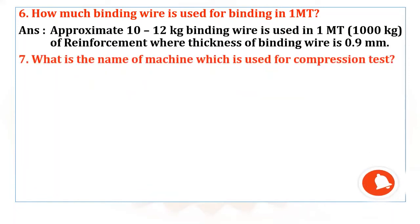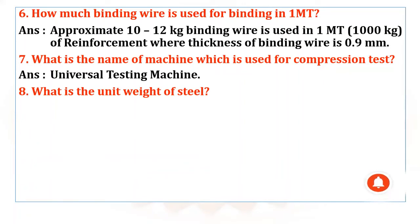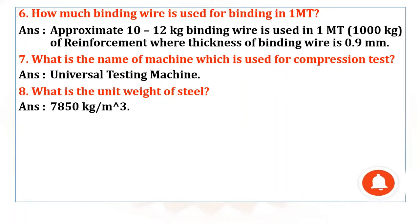Coming to the next question: What is the name of the machine used for the compression test? That is nothing but the Universal Testing Machine. Coming to the eighth question: What is the unit weight of steel? The unit weight of steel is 7850 kg per meter cube.